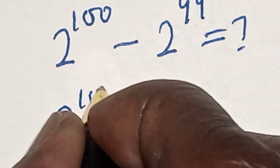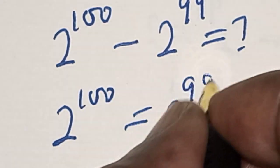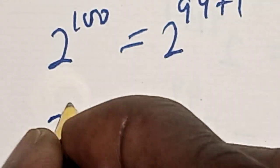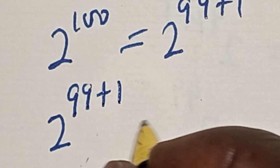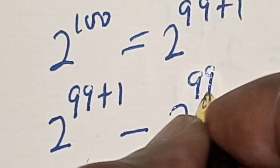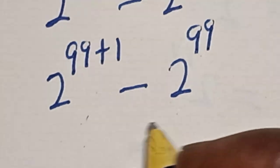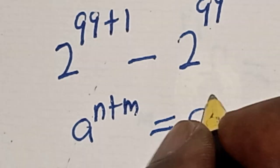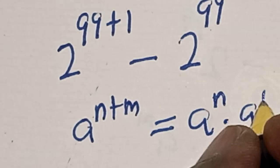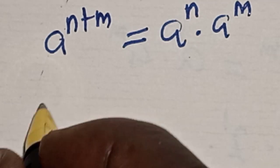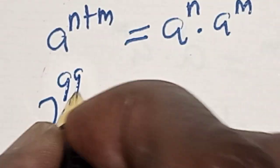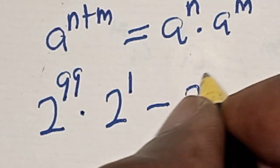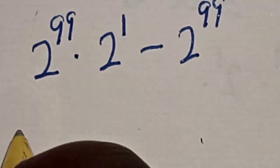2 raised to power 100 is equal to 2 raised to power 99 plus 1. Let's substitute: 2 raised to power 99 plus 1, minus 2 raised to power 99. Remember this rule: a raised to power n plus m is equal to a raised to power n multiplied by a raised to power m. This becomes 2 raised to power 99 multiplied by 2 raised to power 1, minus 2 raised to power 99.